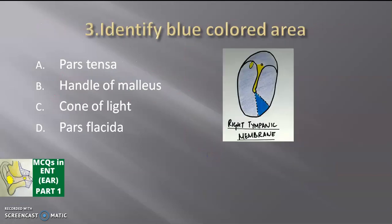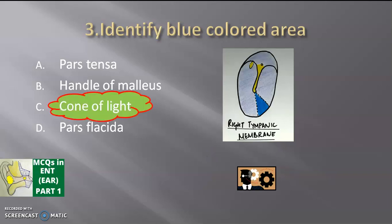Next, identify the blue colored area in this picture. Options: pars tensa, handle of malleus, cone of light, pars flaccida. Time is up. Cone of light is the answer. This is the cone of light, this is the handle of malleus, this is the pars tensa, and the rest of the tympanic membrane is called pars flaccida.